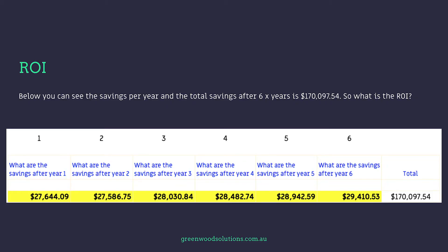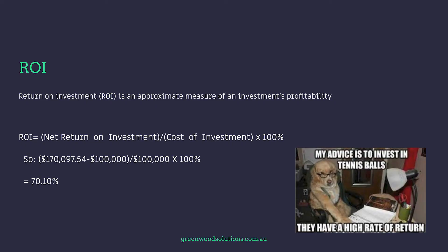You can see the savings per year below, and the total savings after six years is $170,000. So, what is the return on investment? ROI is an approximate measure of an investment's profitability. The formula is: ROI equals net return on investment divided by cost of investment, times 100%. So: $170,000 minus the initial investment of $100,000, divided by $100,000, times 100 — giving a return on investment of 70.10%. Sounds fantastic, but it hasn't taken into consideration the time value of money, or how long that investment takes to get that return.